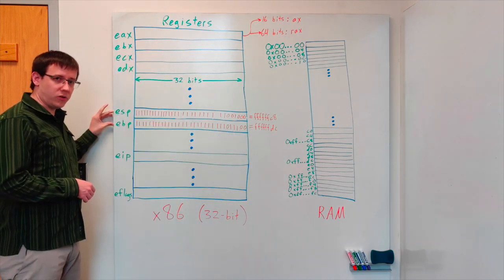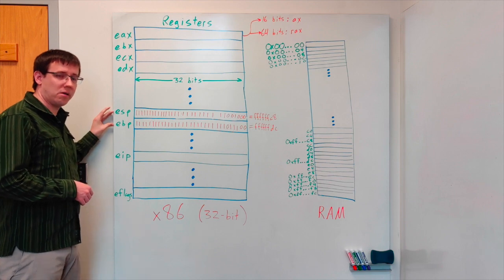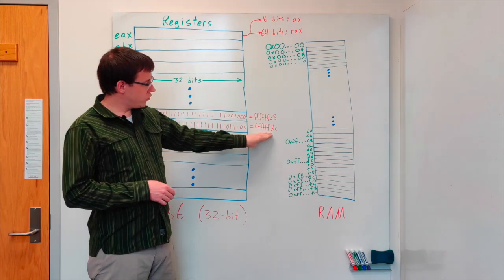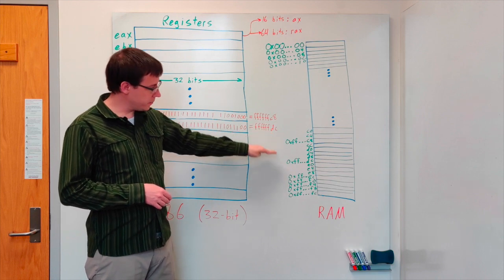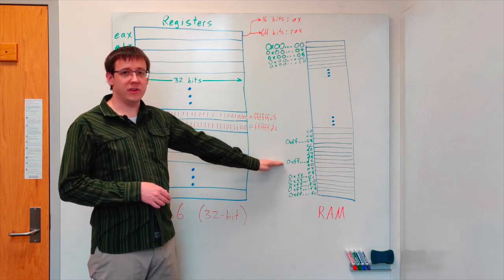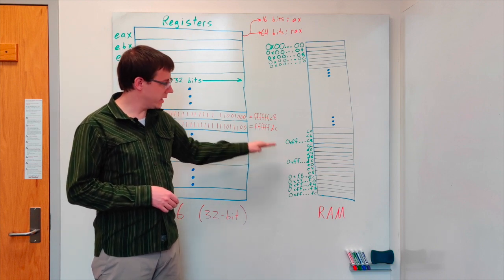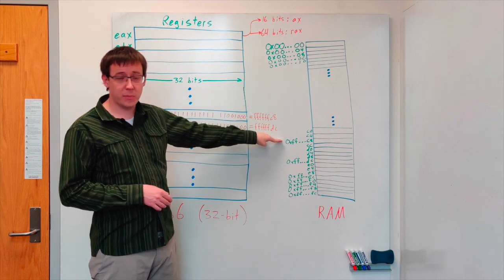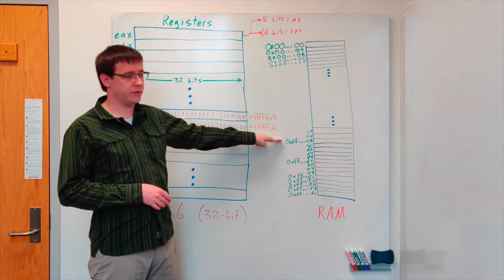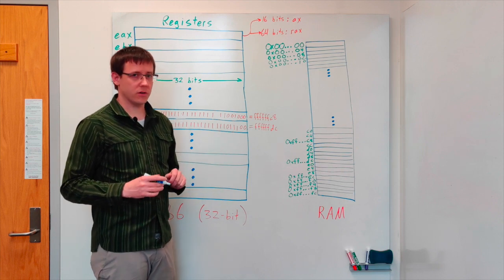The job of these registers is to store the bottom and top of the current stack frame. So this address FFFFDC is the bottom of the stack frame for whatever function is currently executing, and similarly FFFC8 is the top of the stack frame for the current function. So we can think of these registers as pointing to the top and bottom of the current stack frame.